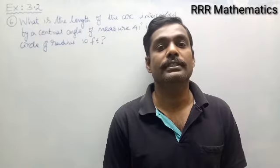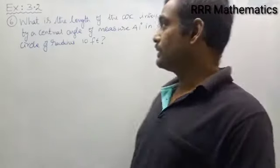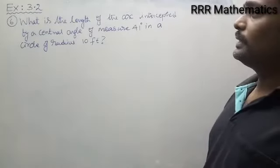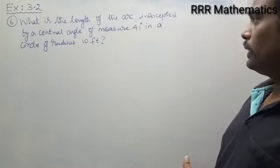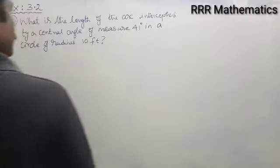Hi my dear students, today we will discuss Chapter 3 Trigonometry, Exercise 3.2, Question Number 6. What is the length of the arc intercepted by a central angle of measure 41 degrees in a circle of radius 10 feet?